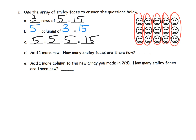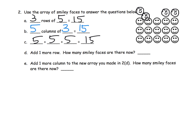What if we were to add one more row? If we were going to add one more row, we'd put it at the top. We know we need five smiley faces: one, two, three, four, five. There's our extra row of smiley faces. So how many smiley faces are there now? We take our original 15 and count five more: 15, 16, 17, 18, 19, 20.